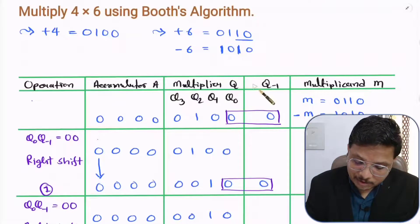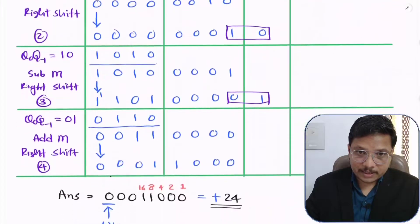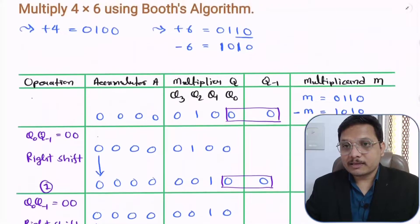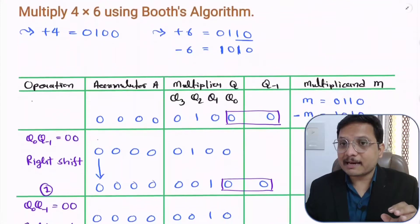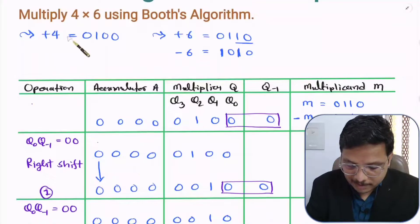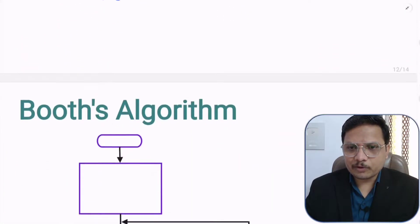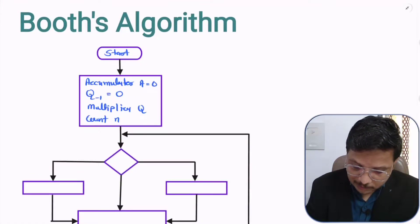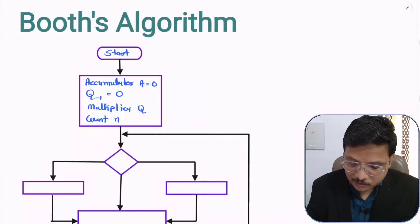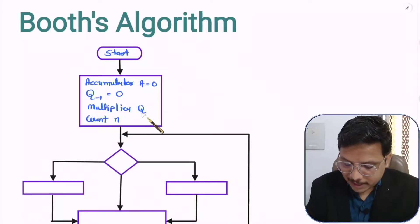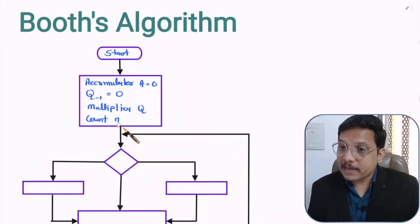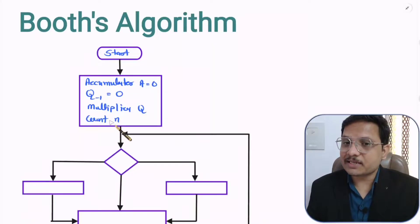We need to execute a number of steps. I have executed 4 steps here. Why 4 steps? The number of steps is based on how many bits we are multiplying. Since both multiplier and multiplicand are 4 bits, we need 4 steps. In the flowchart, we start, then initialize: accumulator = 0, q-minus-1 = 0, load the multiplier, and set count n — which tells us how many steps to execute.